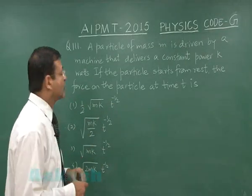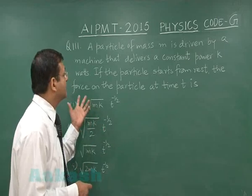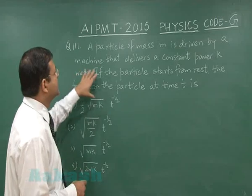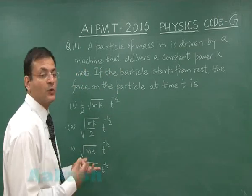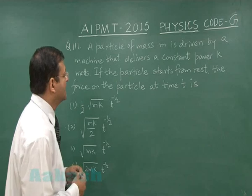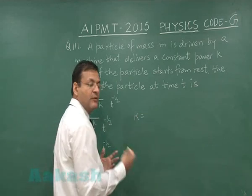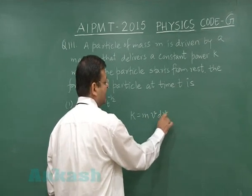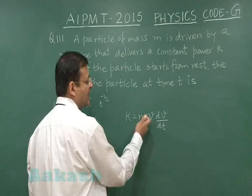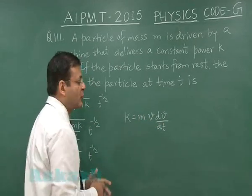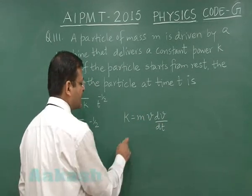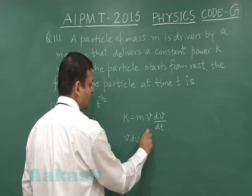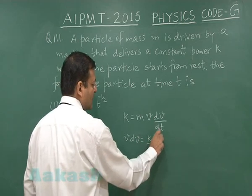In question 111, which is based on work-energy-power, they say that a particle of mass m is driven by a machine that delivers a constant power K. K is force into velocity. I am writing power as force into velocity. Further, I can write mass into velocity into dv by dt. This is mass into acceleration, that is force into velocity. If you integrate that thing, you can write it as v dv equals K by m dt.